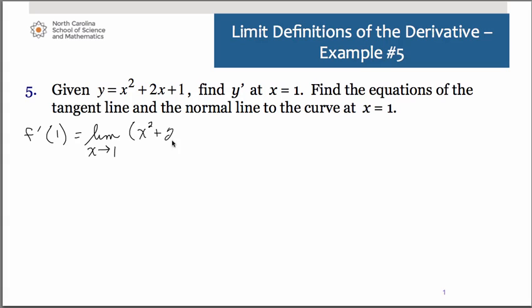minus f of c, so in this case we need the function value at 1. So we need to find essentially f of 1 on our own and many of our other examples that was given to us in the ordered pair. So we need to substitute 1 into the function, and when you do that you do get 4.